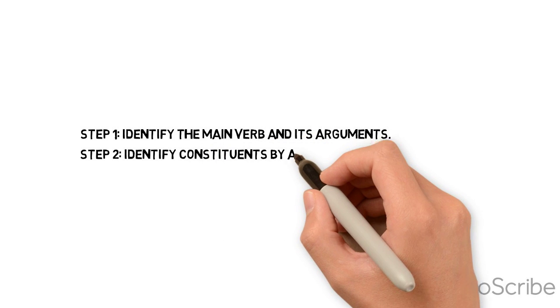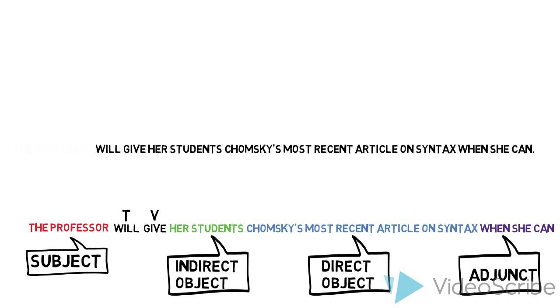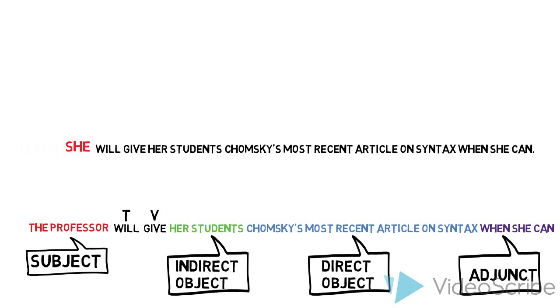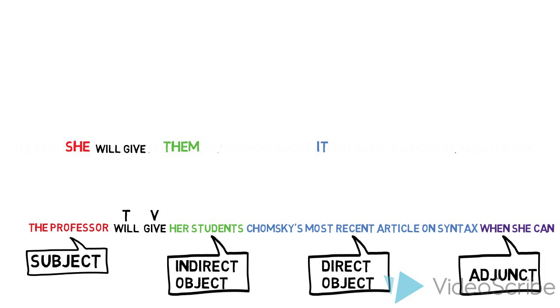Our second step is going to be to identify constituents by applying constituency tests. So for example, the subject, the professor, can be replaced by the pronoun she. Her students can be replaced by the pronoun them. Chomsky's most recent article on syntax can be replaced by the pronoun it. And the adjunct, when she can, can be replaced by an adverb like tomorrow.